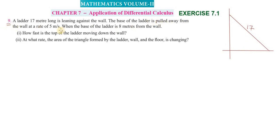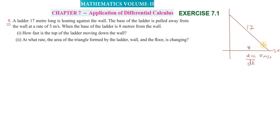The base of the ladder is pulled away from the wall at a rate of 5 meters per second along the x-axis, so dx/dt = 5 meters per second. The distance x when the base of the ladder is 8 meters from the wall, so x = 8 meters.